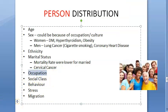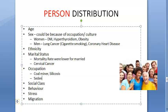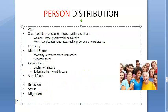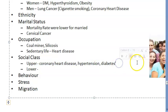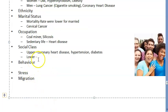Moving to occupation: silicosis in coal miners and heart disease in those with sedentary jobs. For social class: upper class people will have coronary heart disease, hypertension, and diabetes. Lower class people can have communicable diseases, nutritional disorders like protein energy malnutrition, and related conditions.